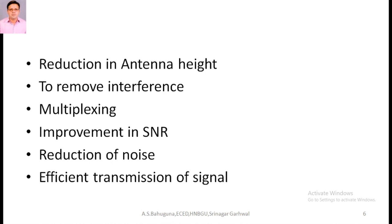Next, we have the improvement in SNR — signal-to-noise ratio. With the help of some modulation techniques like FM and PCM, the noise can be reduced, which helps in improving the signal quality. Next, we have the reduction of noise. With the help of modulation, we can reduce the noise — the noise interferes with the lower frequency signal, so the signal becomes stronger with the higher signal power obtained through modulation. Next, we have efficient transmission — the signal can be transmitted very efficiently and effectively from transmitter to receiver.